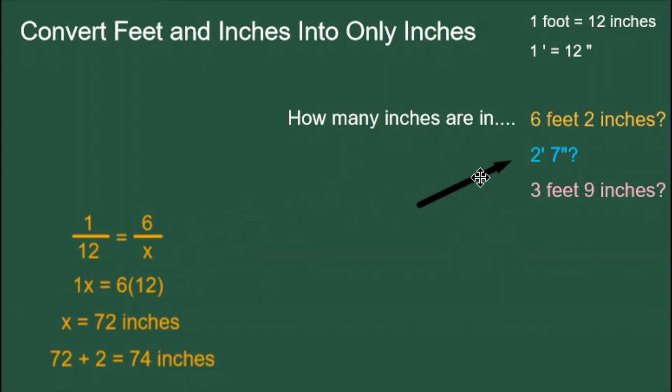How many inches are in 2 feet 7 inches? This question is asked using the symbols. 2 feet 7 inches means 2 times 12 and 7 more. 2 times 12 is 24 and 24 plus 7 is 31. So there are 31 inches in 2 feet 7 inches.